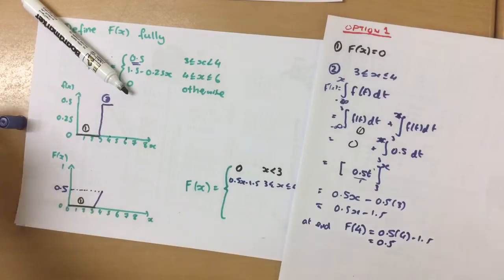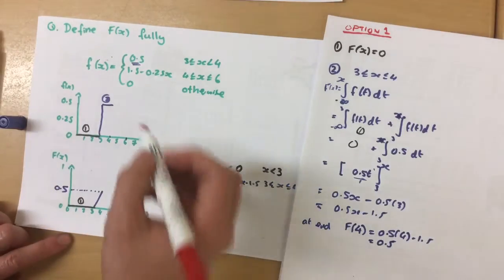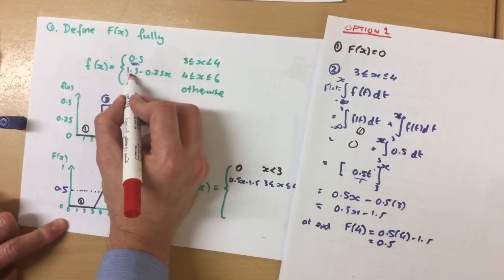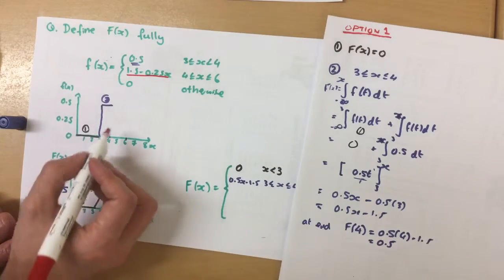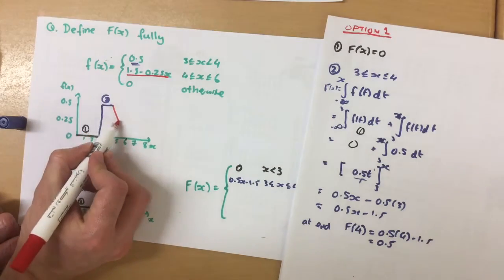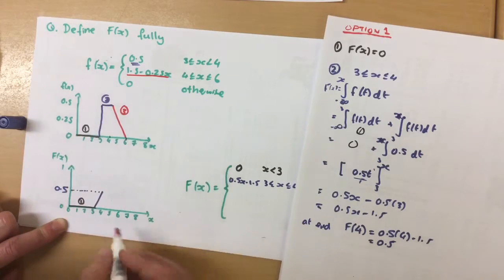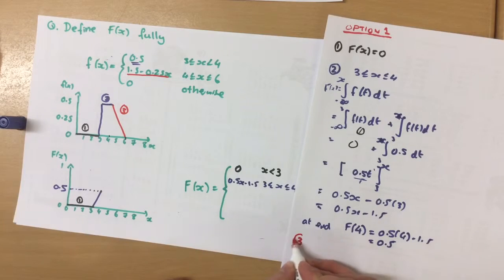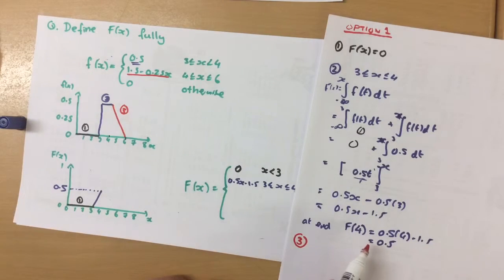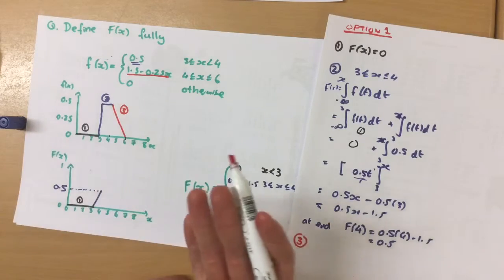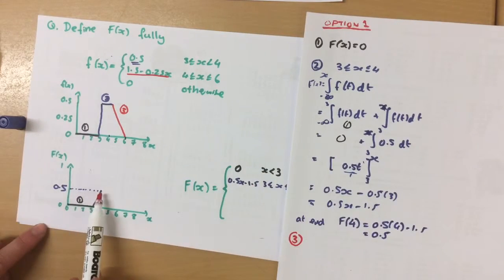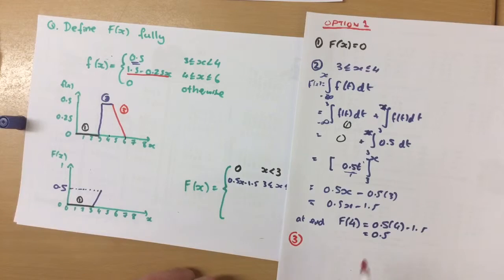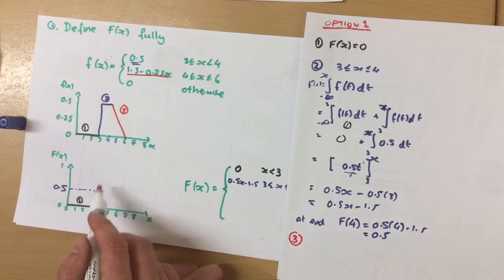Now, then we go to the next section of our graph. And that's described here, which is a slope downwards. This is our third section of the graph. Okay, so this third section. Well, we're going to be starting, because it's cumulative, remember, we're adding it up the whole time, we've got to here so far. We know at this point, the cumulative probability is 0.5.